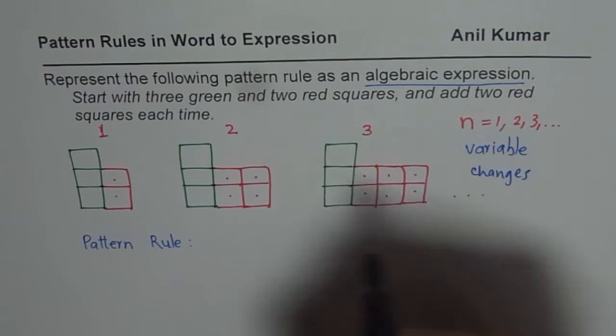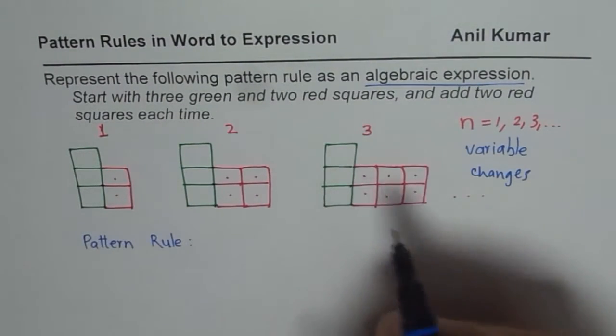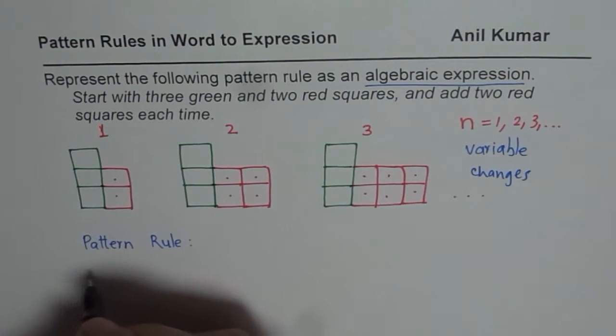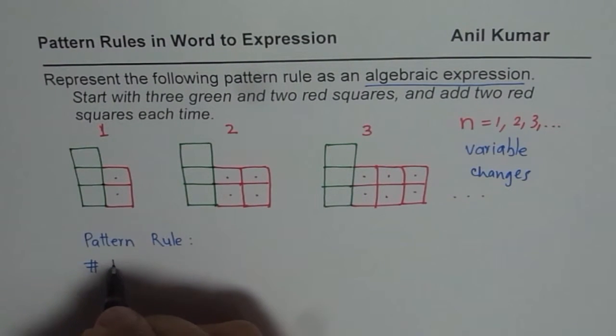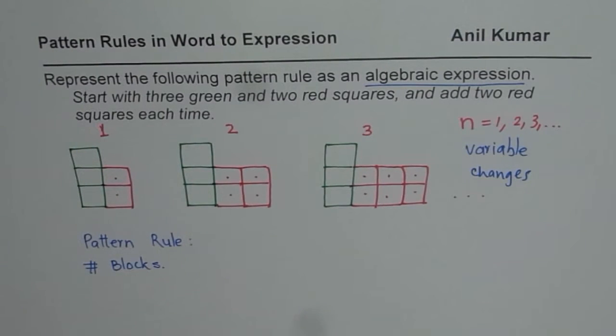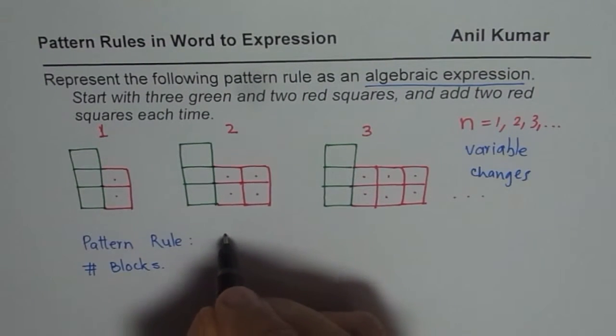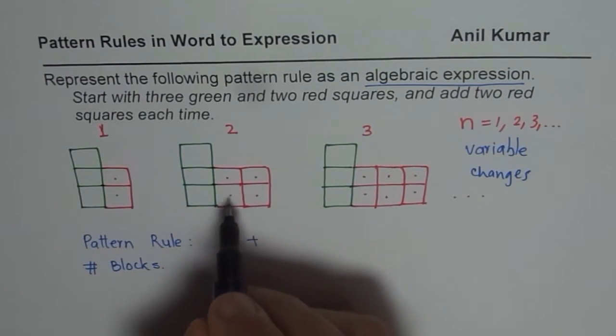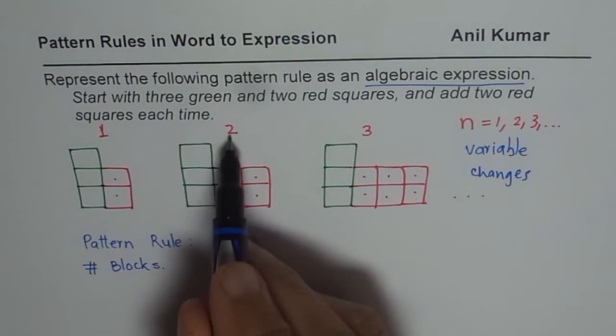A variable is something which changes. Do you see that? The value is changing from 1 to 2 to 3, and we need to write down the number of blocks. The pattern rule will give us the number of blocks - the square blocks in this case. So we have 3 fixed green blocks. We say 3 for that.